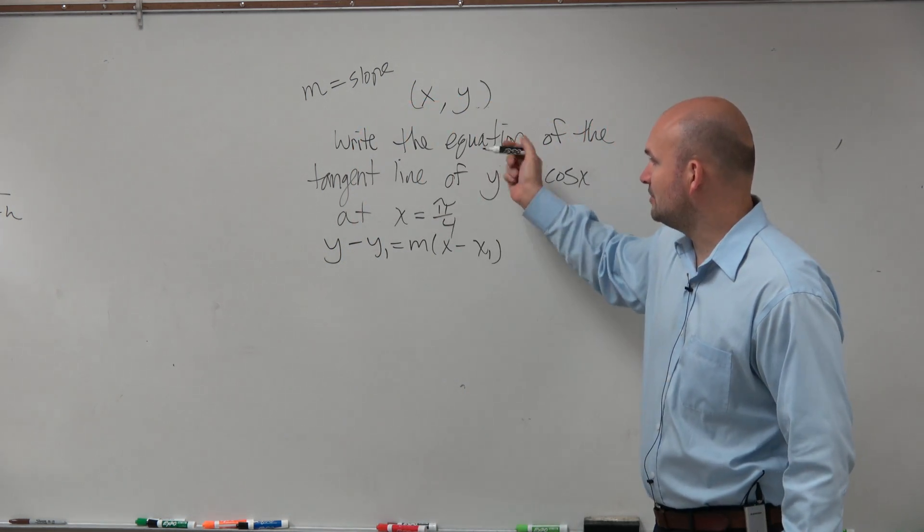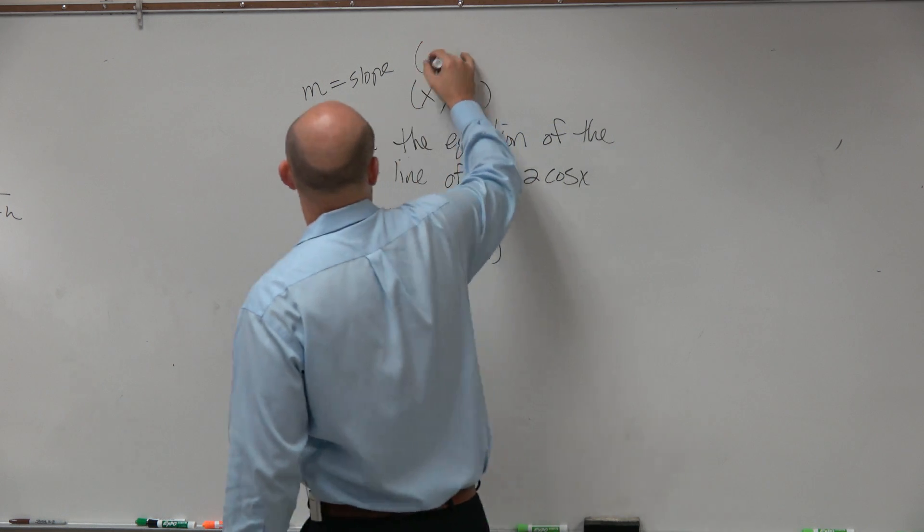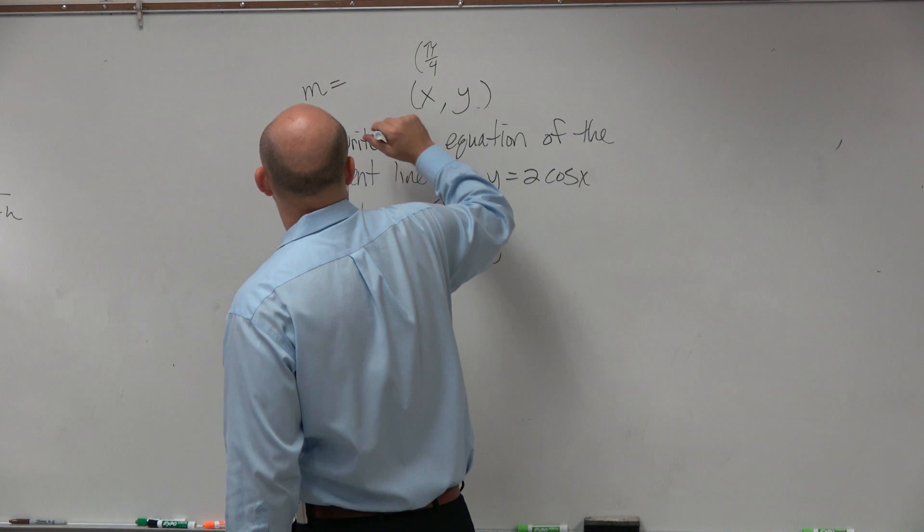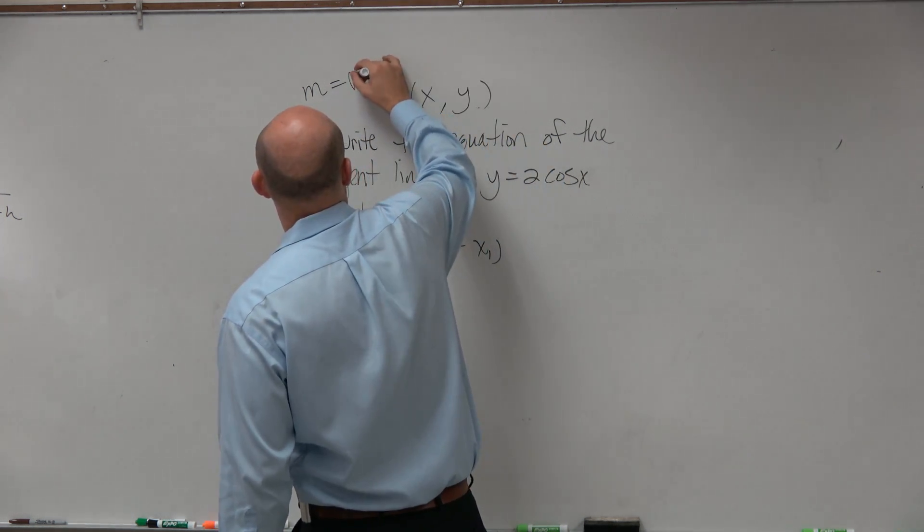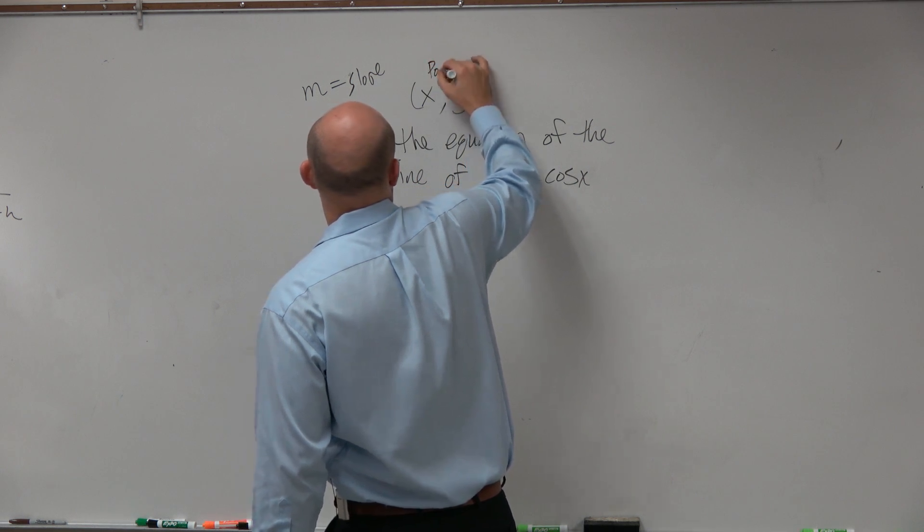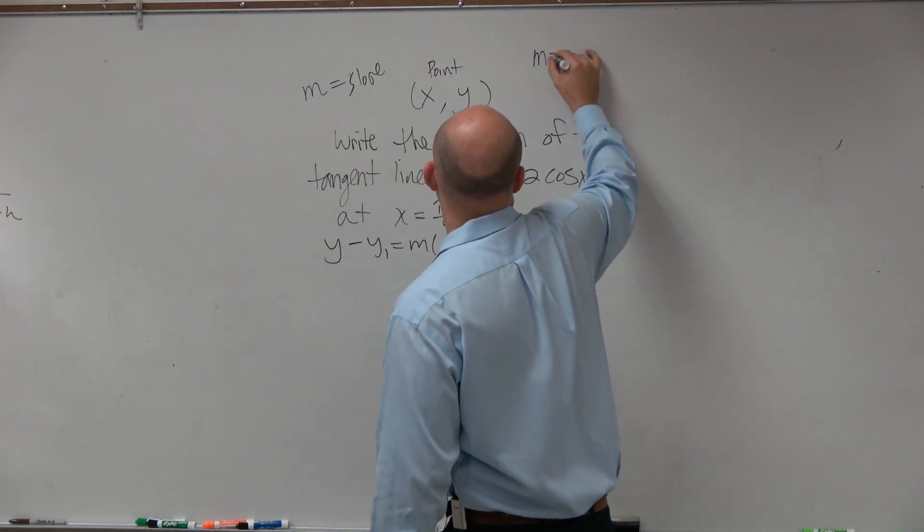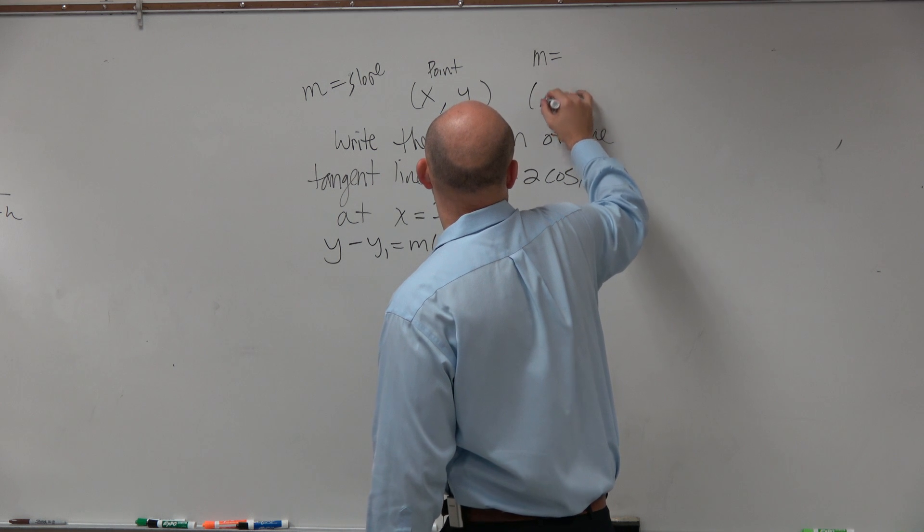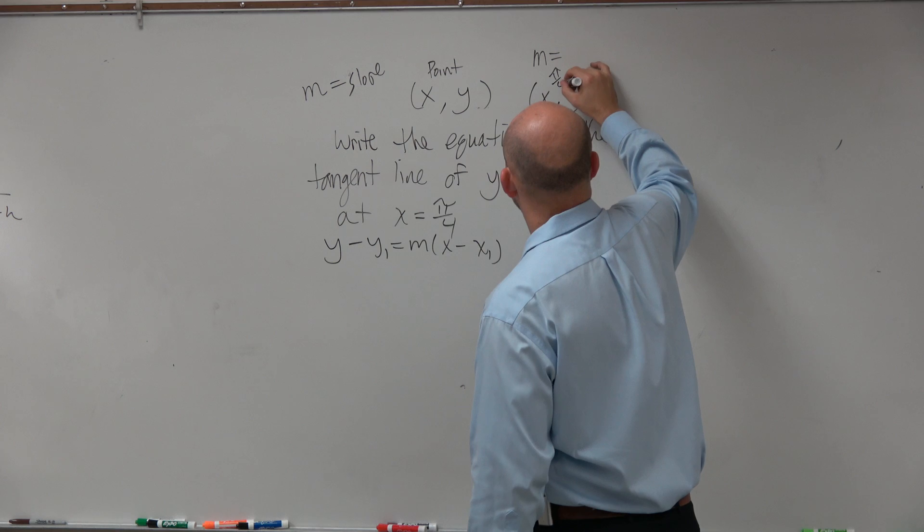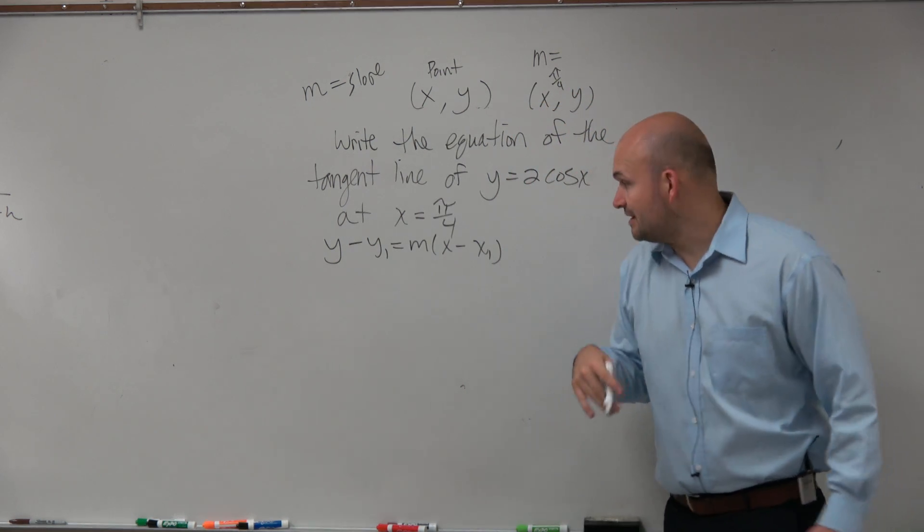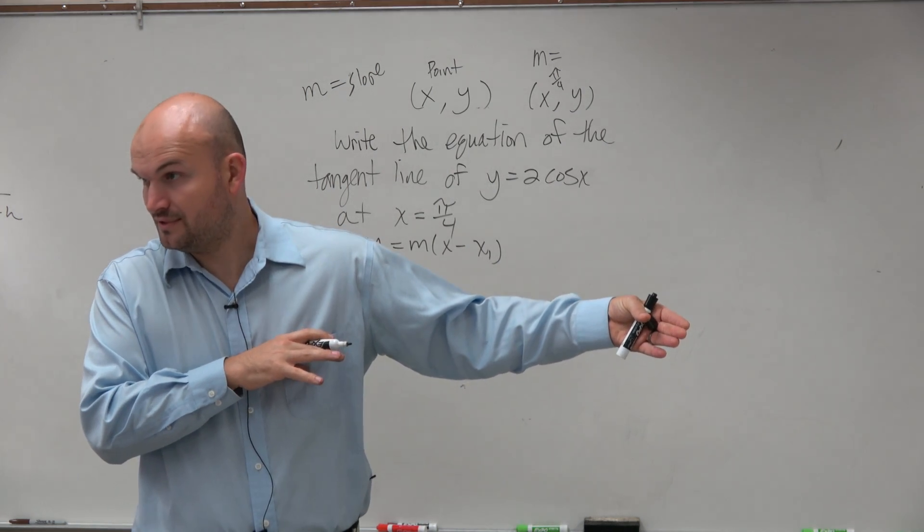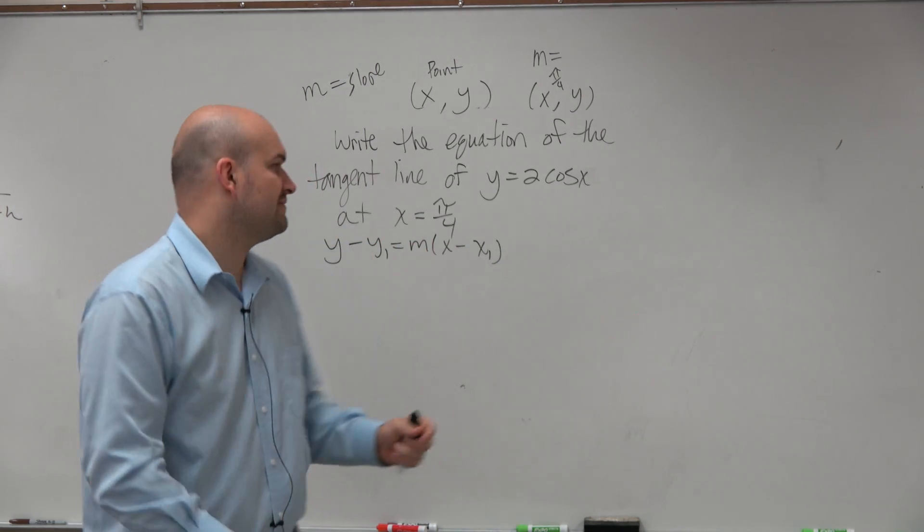Now in this problem, we're given an x coordinate. Awesome. Actually, let's do this here. This is your slope, and this is your point. Perfect. So let's figure out what m is and what x, y is. So we know x is pi over 4. So if I need to be able to figure out what y is, I just know I need to plug that into the function and find the y, right? And I saw some of you guys do this first. Perfectly fine. So let's do that.